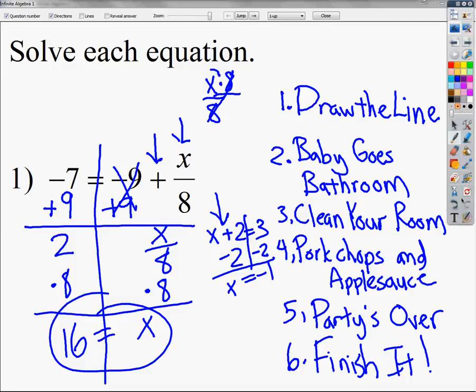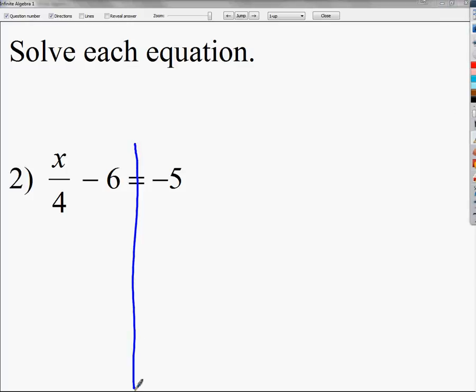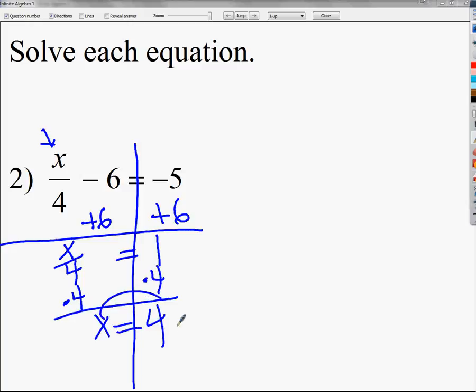So that's the first one. Let's do a couple where I don't have to do so much writing, which means I'm not going to explain all the steps. I am going to explain them, but I'm not going to write them out. So this one, I'm going to draw my line. I don't have any distributive properties, so no baby goes bathroom. I don't need to clean my room, because I have a variable term and an integer term on the left side, and then I just have an integer term or a number on the other. No pork chops and applesauce, because I've only got x on one side. I go straight to the party's over. Here's x. I'm going to get rid of the minus 6, because it's further away. So I'm going to add 6 here, and I'm going to add 6 to the other side as well. Negative 5 plus 6 is 1. Now I'm left to finish it, so in order to get rid of divide by 4, I'm going to multiply by 4. So my final answer is x is equal to 4.